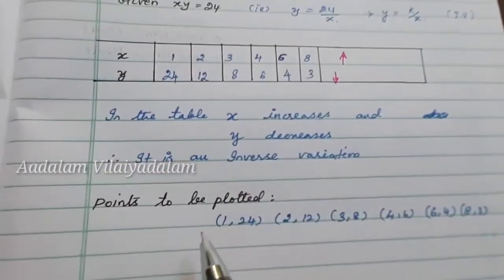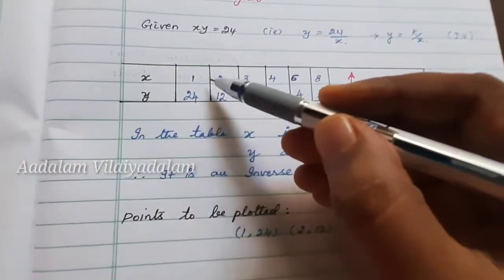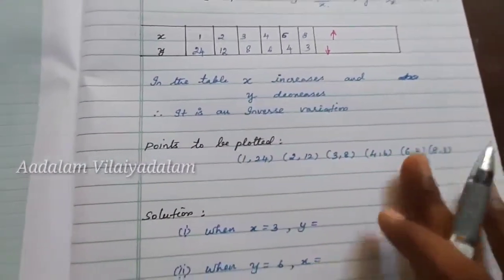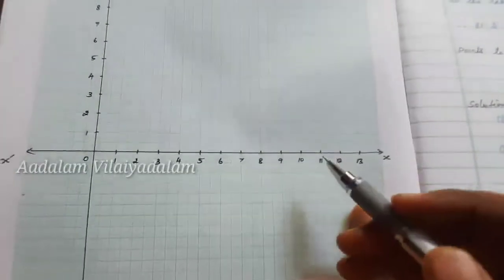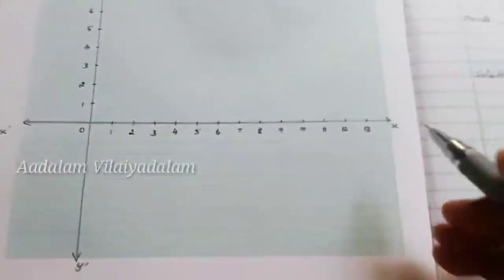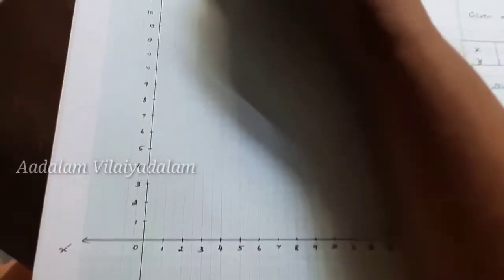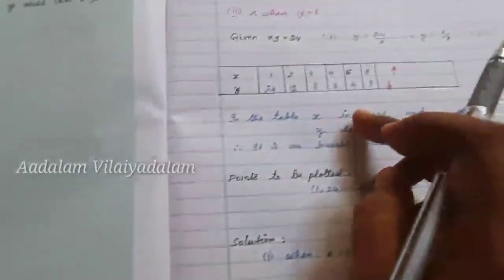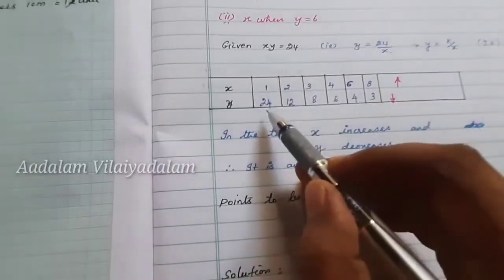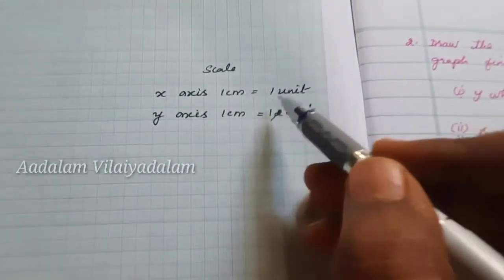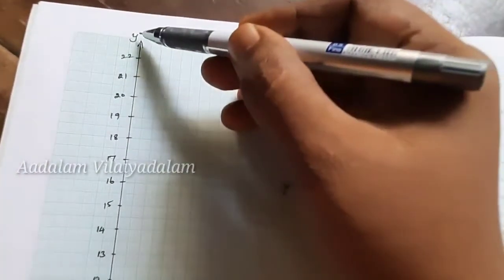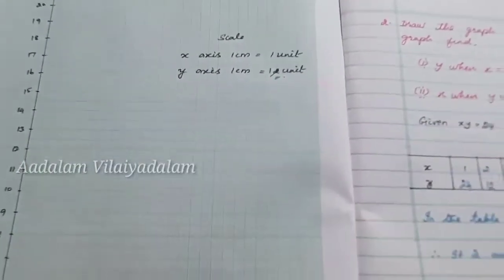Next, we plot the points from the table: (1, 24), (2, 12), (3, 8), (4, 6), (6, 4), and (8, 3). Set up the graph with x-axis, y-axis, x-dash, y-dash, and origin. For the scale: x-axis 1 centimeter equal to 1 unit. For the y-axis, since values go up to 24, take 1 centimeter equal to 2 units to fit the graph properly.